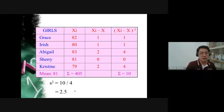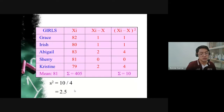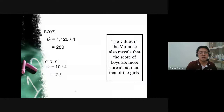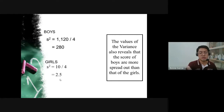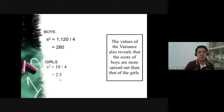Comparing the variances: boys = 280, girls = 2.5. The same conclusion holds — the boys' scores are more spread out than the girls'. The lower variance of 2.5 for the girls confirms that their scores are much closer together. So the girls perform better than the boys in terms of variability.